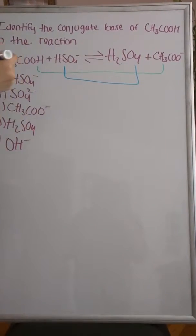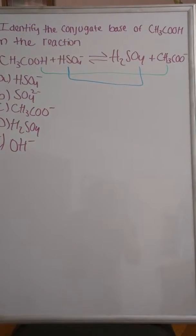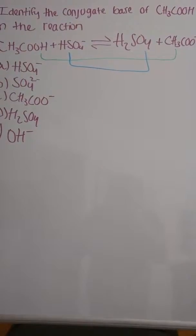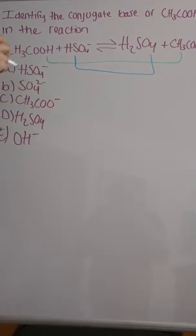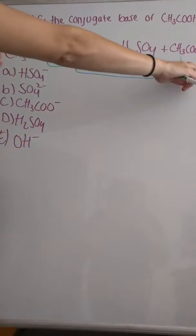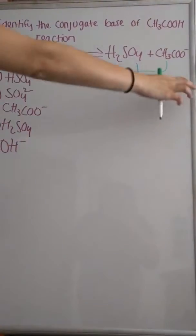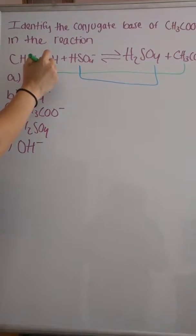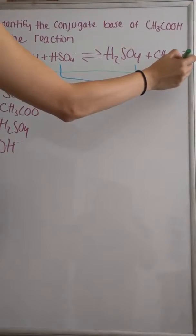And then you're going to try to identify which one is the acid and which one is the conjugate base, and which one is the base and which one is the conjugate acid. So for acetic acid, you can tell that it lost a proton from hydrogen. So we're going to assume that this is the acid and this is the conjugate base.